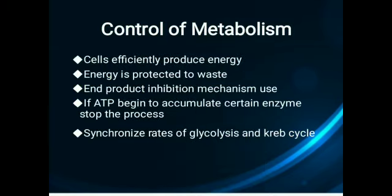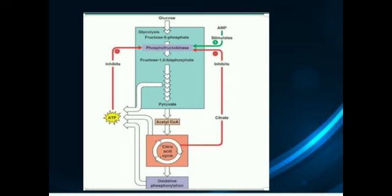Here is the control of metabolism. Cells efficiently produce energy, and sometimes this energy accumulates. Certain enzymes stop this process to prevent excess ATP generation — this is called end product inhibition. In the control of metabolism, the rates of glycolysis and the Krebs cycle are synchronized. This flowchart shows how the enzyme phosphofructokinase regulates the metabolic pathway by increasing or decreasing its activity in response to signals.